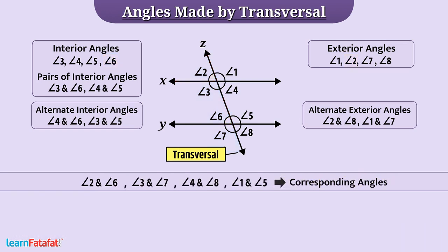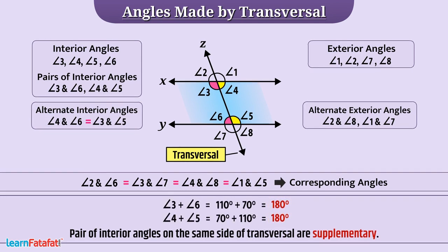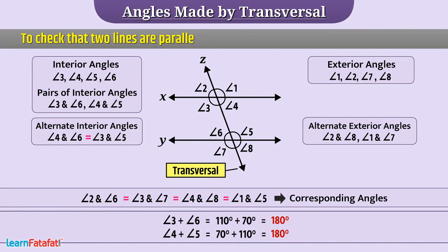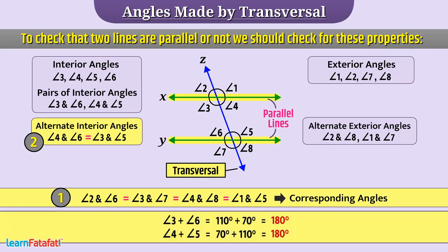The two lines which never meet each other are called parallel lines. When a transversal intersects two parallel lines, then all pairs of corresponding angles are equal, all pairs of alternate interior angles are equal, and each pair of interior angles on the same side of the transversal are supplementary. Therefore, to check that two lines are parallel, we check these properties: if each pair of corresponding angles are equal, the lines are parallel; if each pair of alternate interior angles are equal, the lines are parallel; and if each pair of interior angles on the same side of the transversal are supplementary, the lines are parallel.